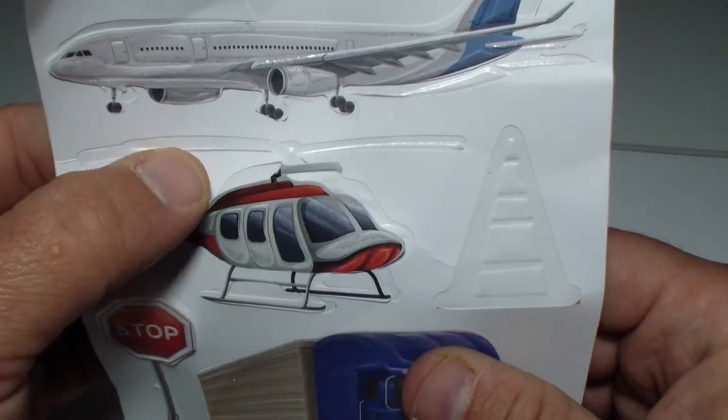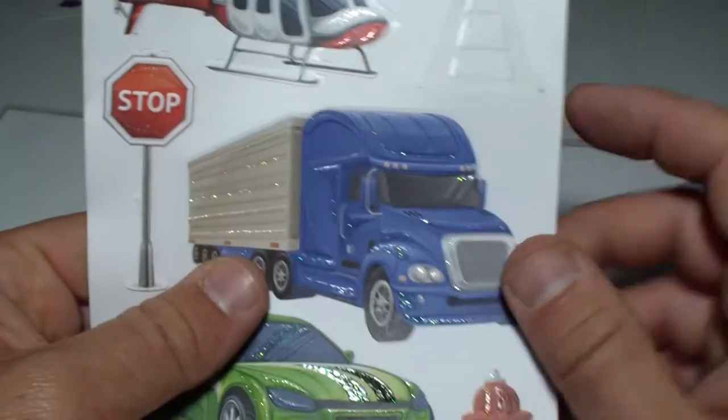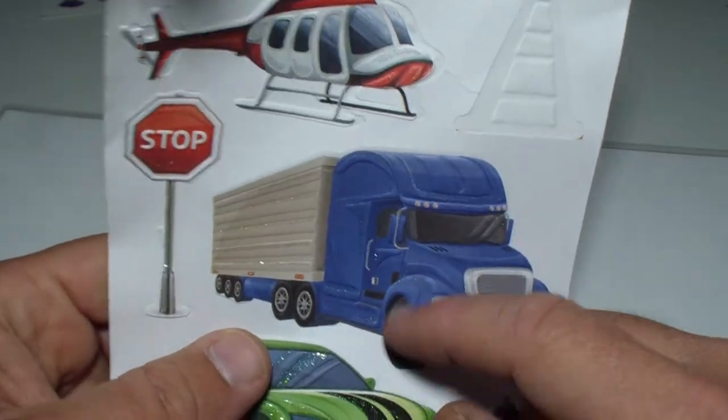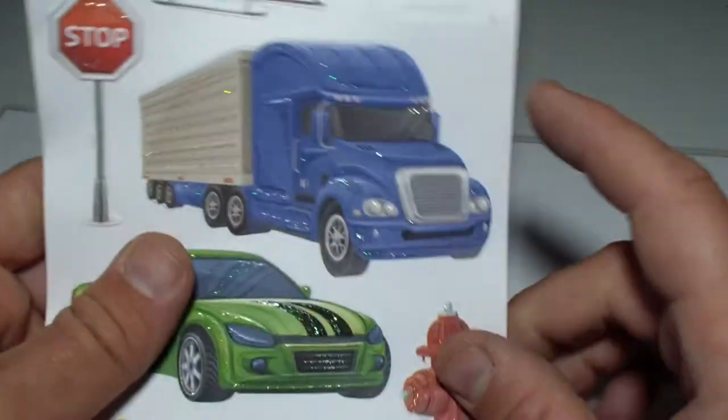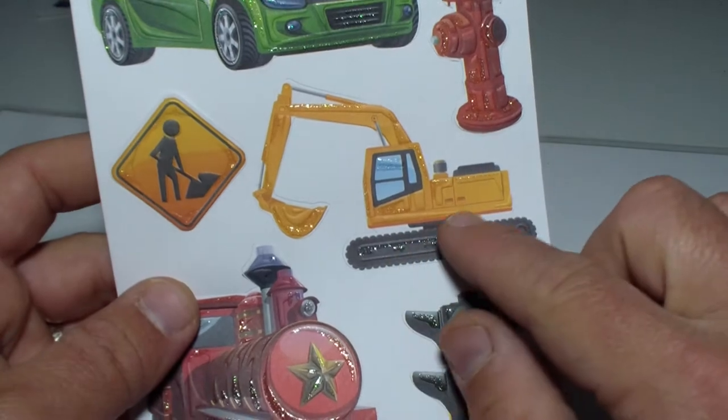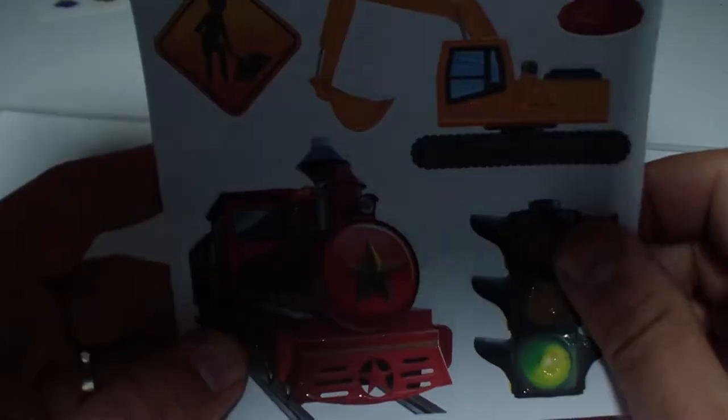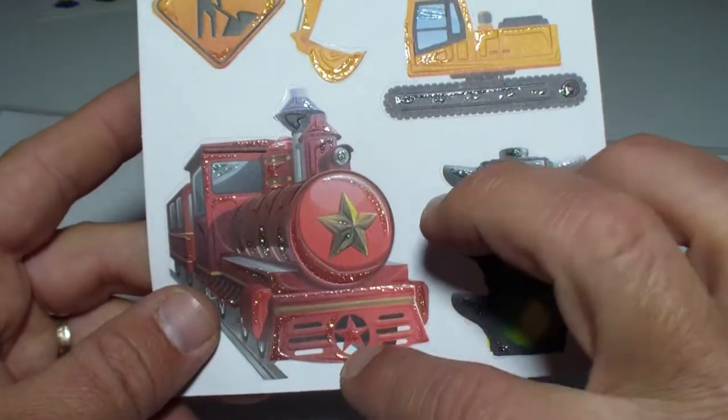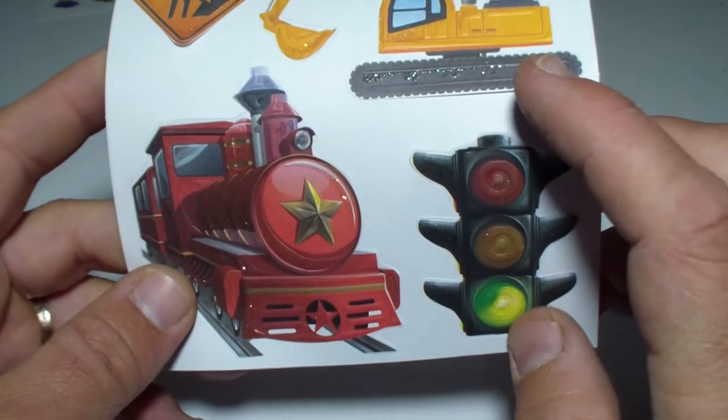And that's a semi-trailer truck, and that's a green racing car, and that's an excavator, a yellow one, and that's a train - looks like a Russian train, and that is traffic lights.